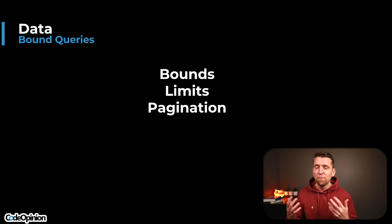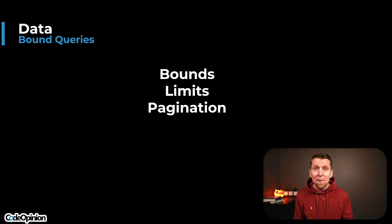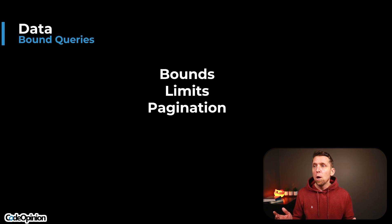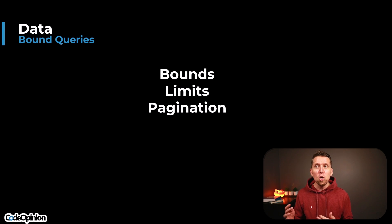No matter what type of database you're using, when you're writing a query for some new feature, you don't want it to be unbound. You want to have some bounds — that could be date ranges, a limit on the number of records returned, pagination, etc. You don't want a situation where it's fine with 10 records locally but then in production over years you have hundreds of thousands. Thinking about every query you're writing and how you can apply bounds suitable for the actual feature is the first tip.